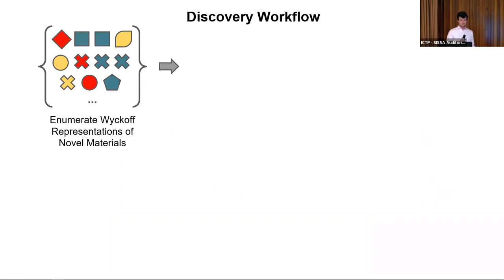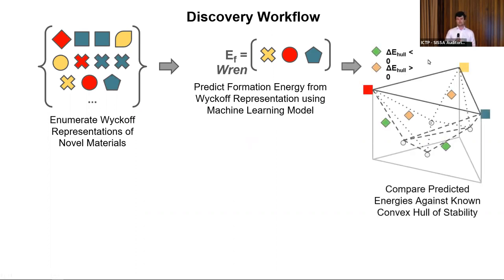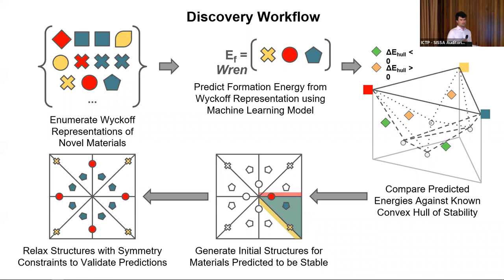The materials discovery workflow starts from a large library of enumerated Wyckoff positions, passes the crystal structures through the WRN model to get formation energies, compares them to the current convex hull of stability, selects ones predicted to lie below it, reconstructs the crystal structures, and finally validates them using DFT to confirm whether they actually lie below the current convex hull.